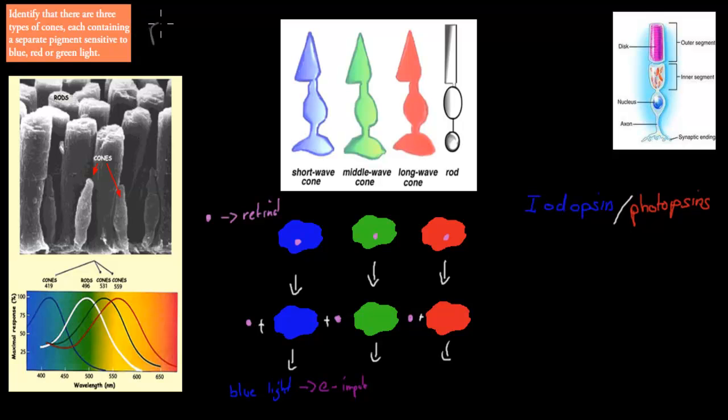In the last video we talked about rods and rhodopsin and how rhodopsin and rods combine to make sure we can form an electrical impulse from a light impulse or light energy. And these were the rods. So this is again the rod shape. You can see the clear rod shape, just like that. That's a rod.